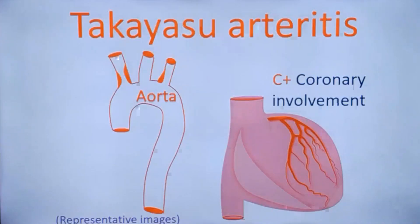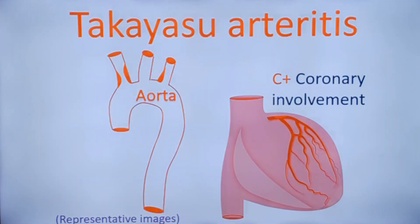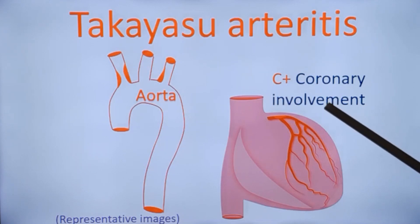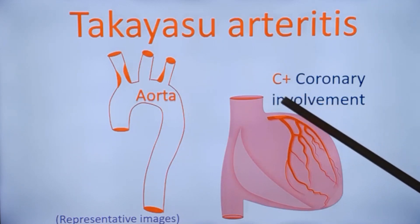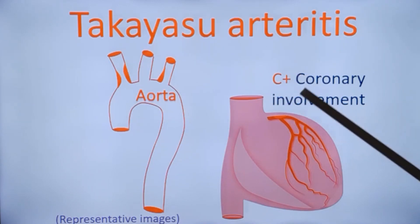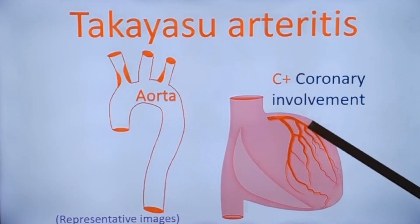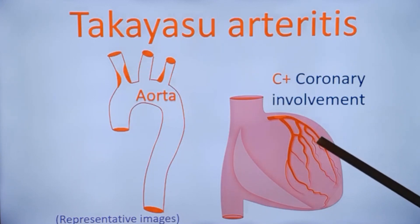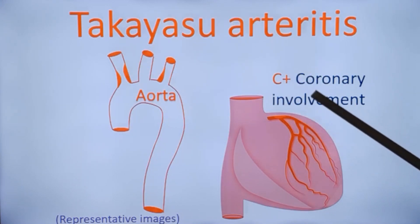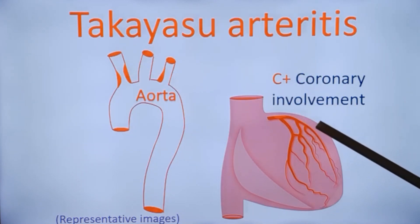When there is involvement of coronary arteries, it is designated as C plus. When there is involvement of pulmonary arteries, it is designated as P plus.